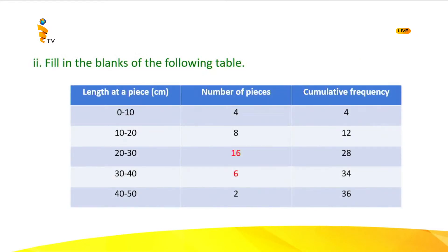Now you have to fill in the blanks of the following table. The blanks are highlighted in red. You find cumulative frequencies by adding the frequencies: the first cumulative frequency is 4, the next is 4 plus 8 equals 12. To find the missing frequency, subtract 12 from 28 to get 16. Then subtract 28 from 34 to get 6. Therefore, the two blanks in the table are 16 and 6.